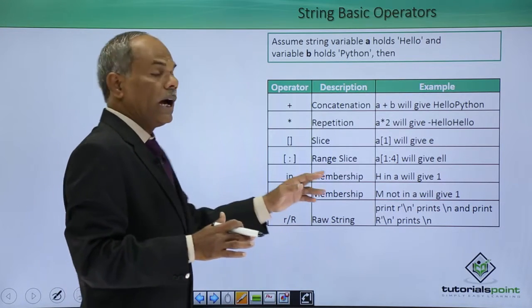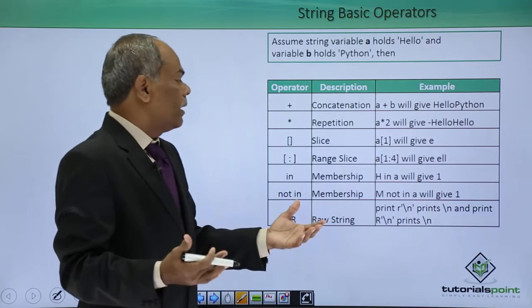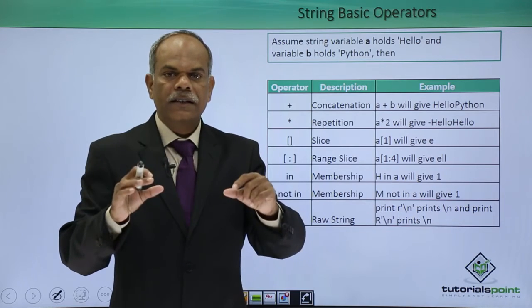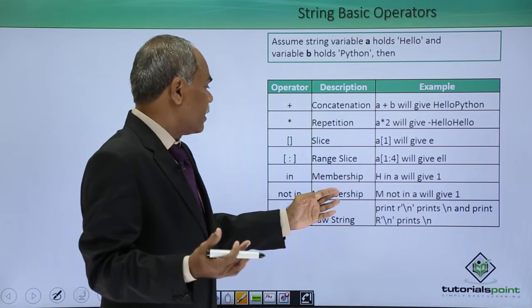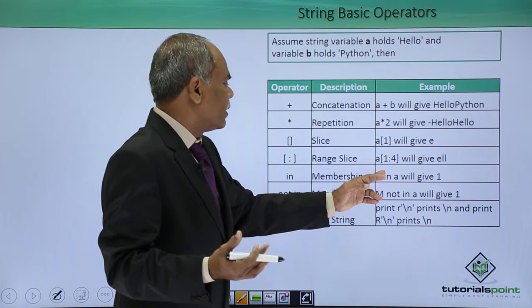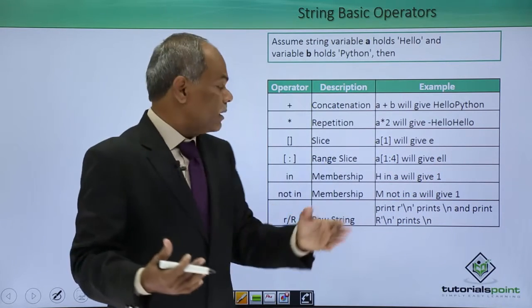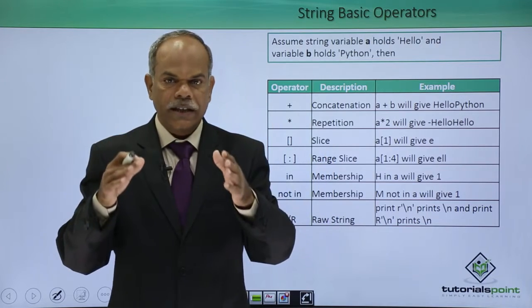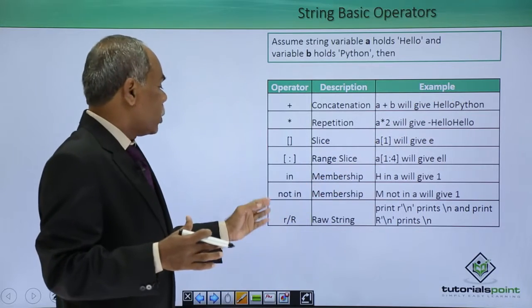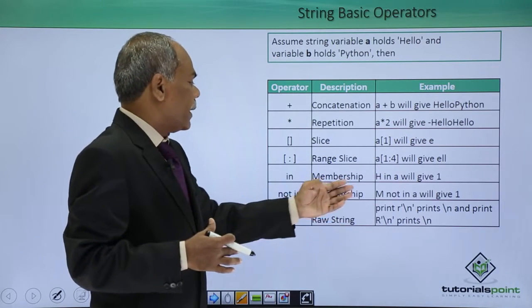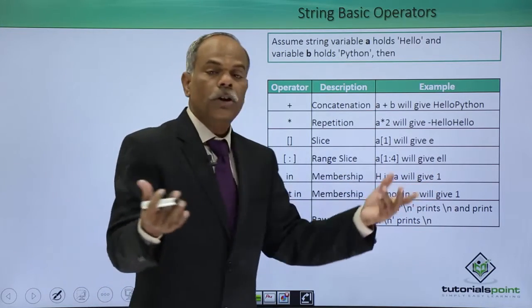In and not in are called the membership operators. It is basically verifying whether a particular element is present in the sequence, in this case the string. So if I say h in a, that means if I want to test whether the character h is present in the string a, h in a will give 1 because it is there. Not in is the reverse of in. m not in a will also return 1 because m is not there.